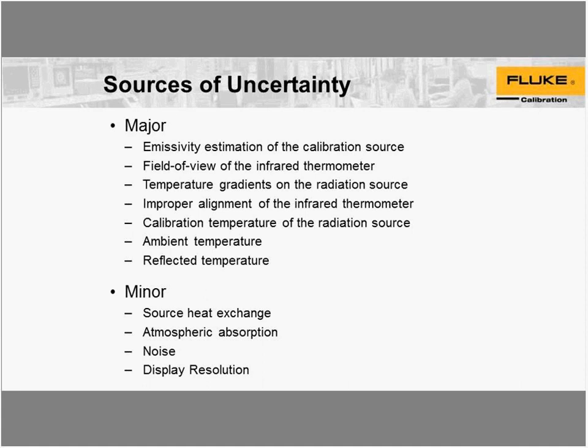Sources of uncertainty you need to consider — I've classified these as major and minor. The major ones are especially important when setting up your laboratory and doing calibrations. Number one is emissivity of the calibration source, then field of view of the infrared thermometer, target size relative to the IR thermometer, temperature gradients of the radiation source, alignment of the infrared thermometer, calibration of the radiation source itself, ambient temperature, and reflected temperature. Minor sources that still need consideration include source heat exchange, atmosphere absorption, and display resolution.